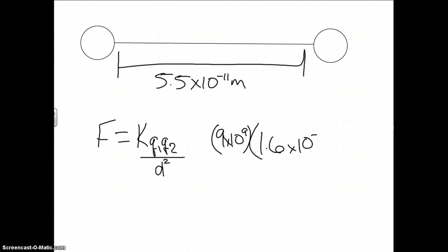1.6 times 10 to the negative 19th squared. And because this is absolute value, you don't have to worry about the electron being a negative one. Because it's absolute value, so it's positive anyway.